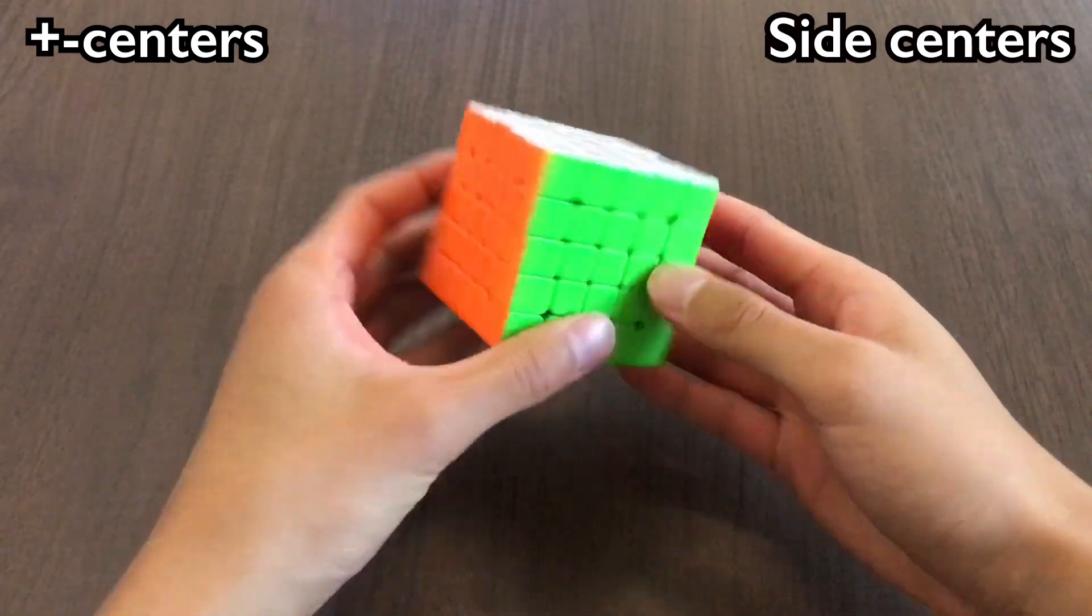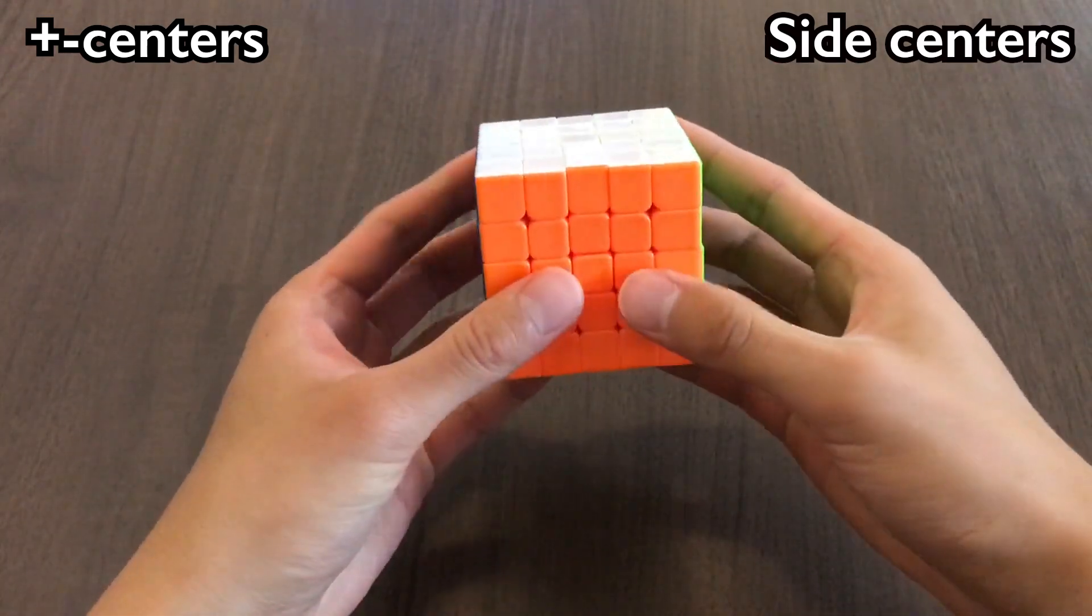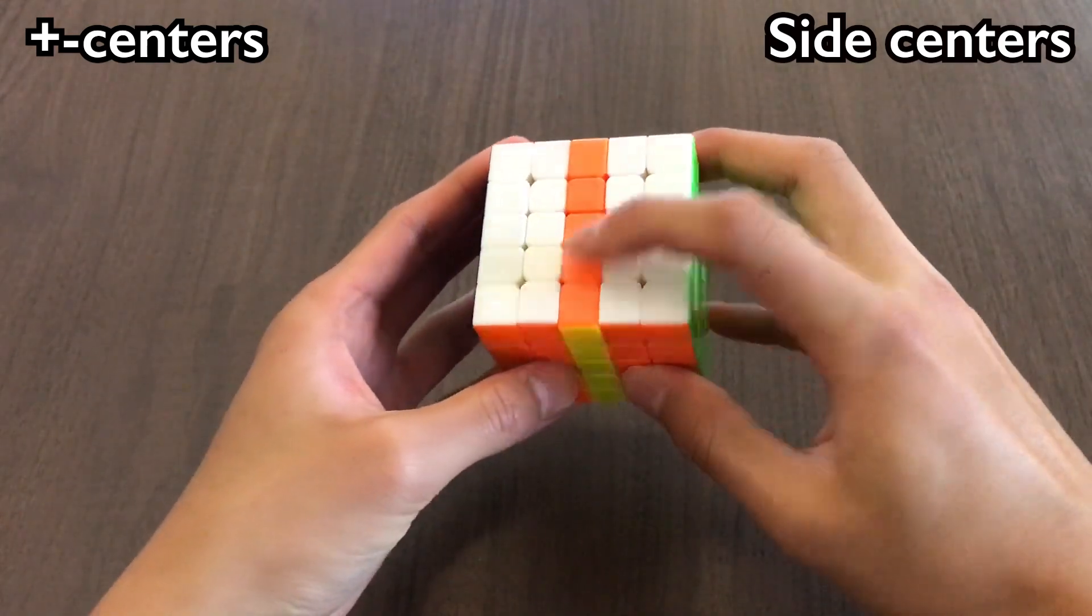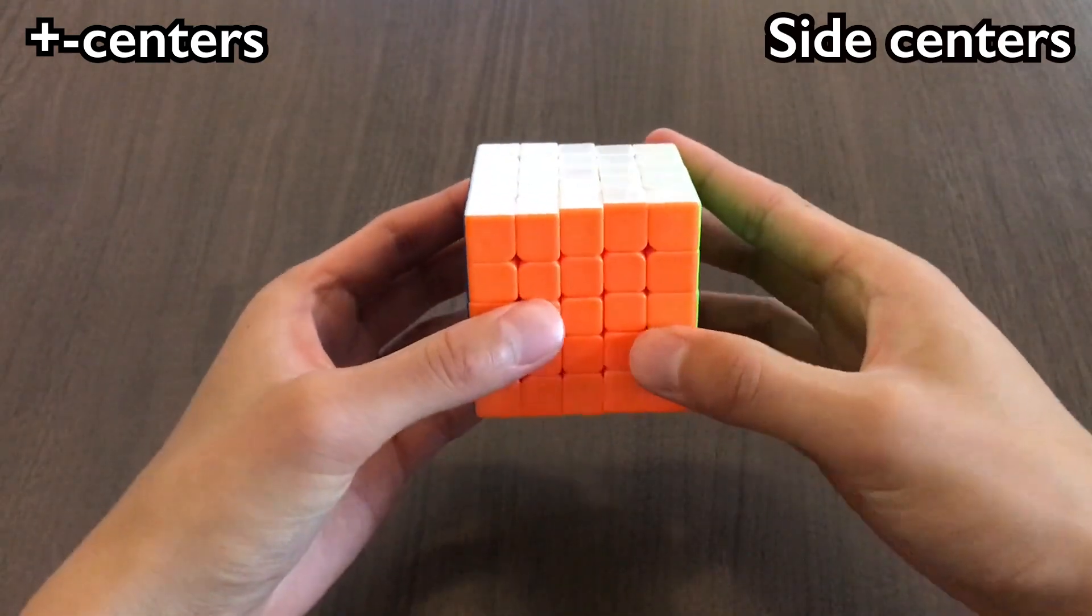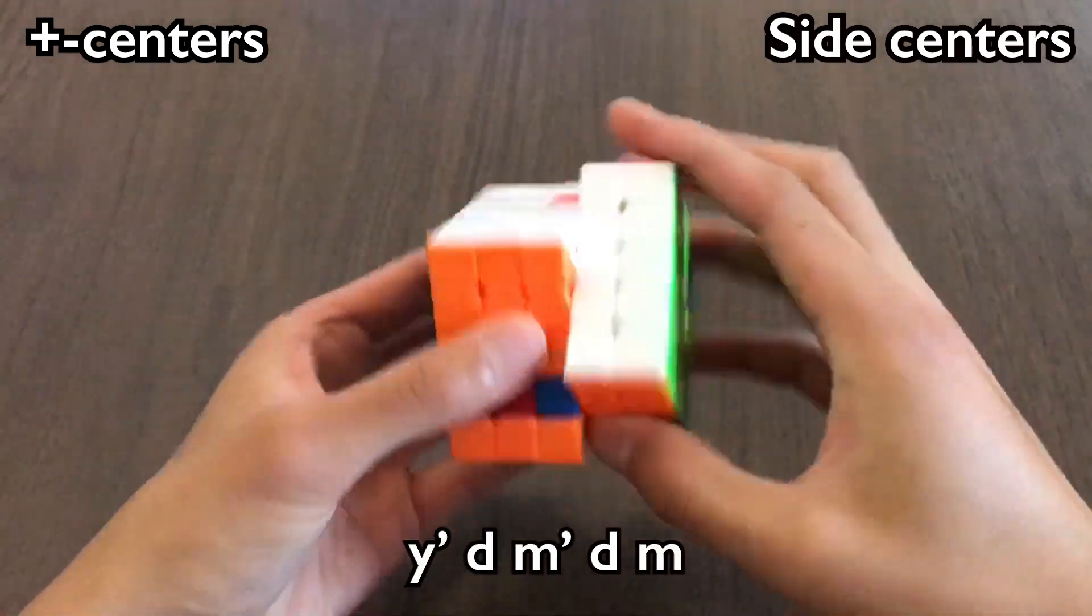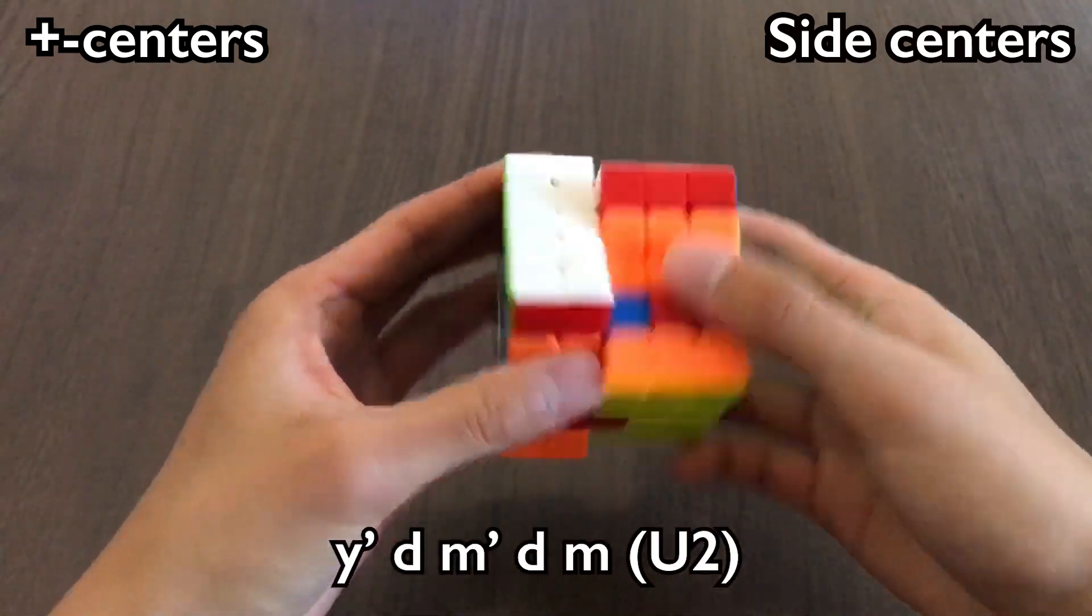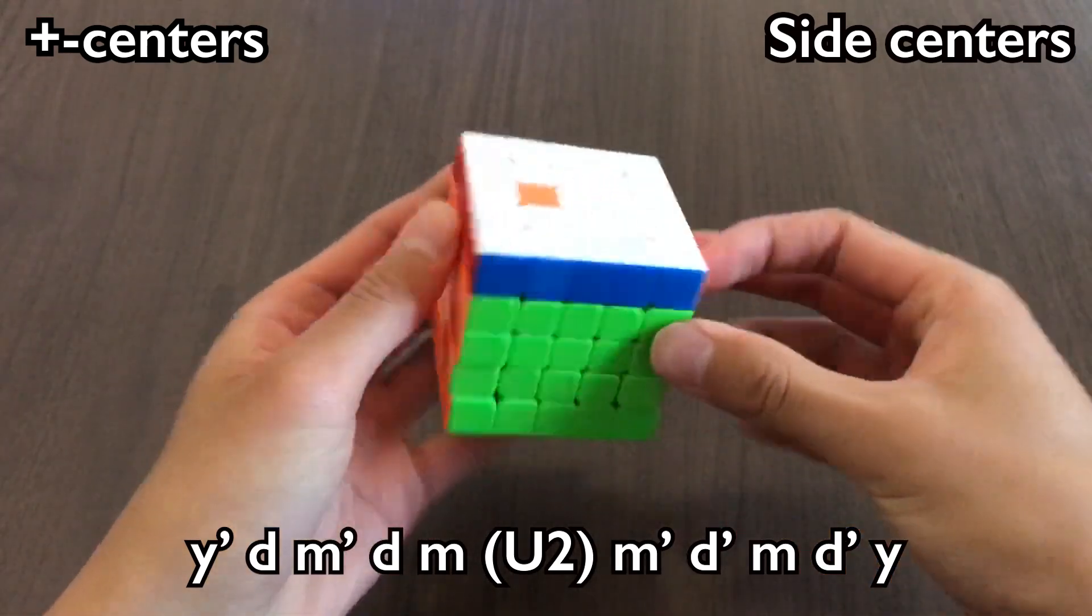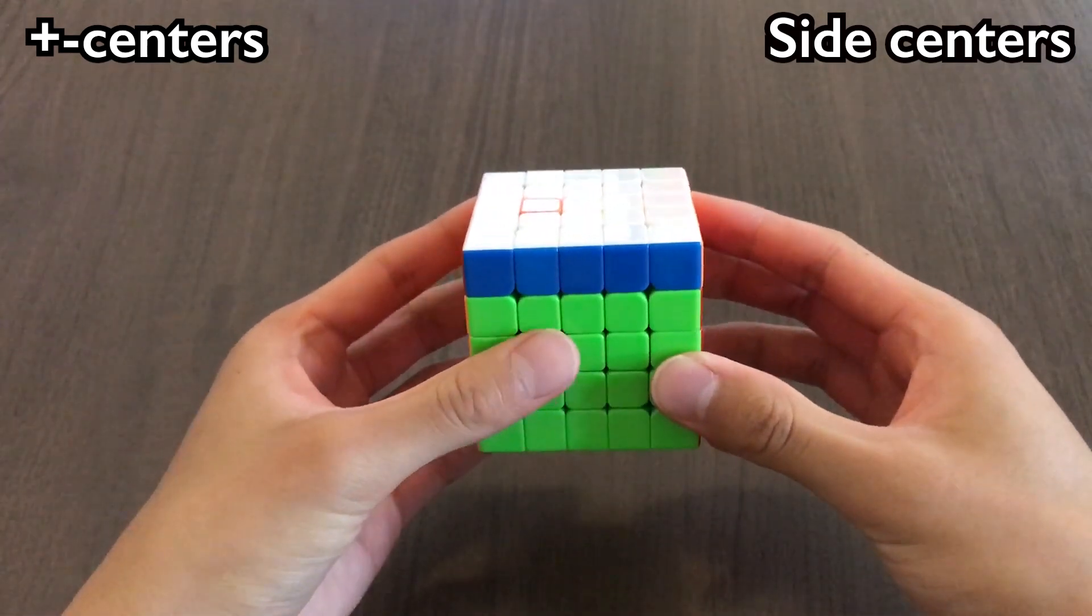There are some trickier targets, like G. If we try to move the target center first, G gets moved as well. So what we have to do is move it out of the way first, then we can insert it into the target spot, do a U2, and then undo the setup. I will put a full list of the setup moves in the description.